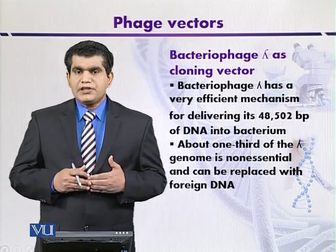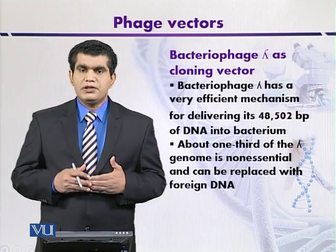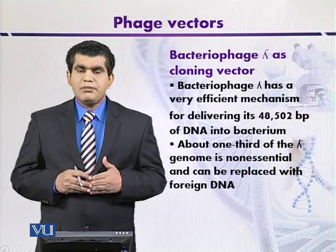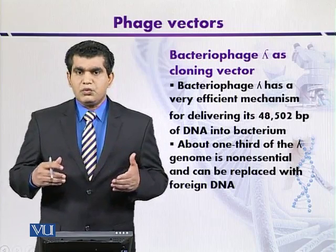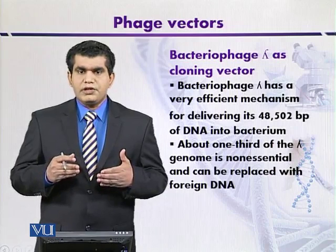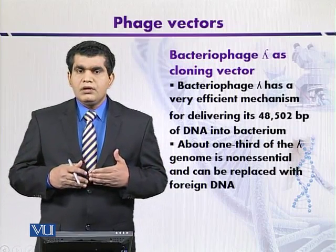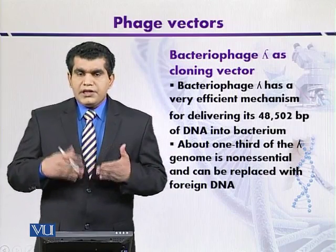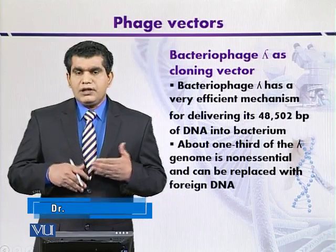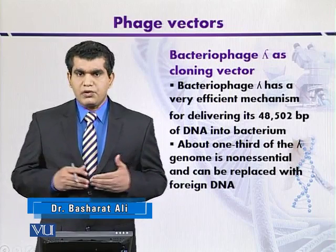Bacteriophage lambda has the ability to infect E. coli by inserting its genomic DNA. If we have a look at the genetic map of the lambda genome, we will find that it is approximately 48.5 kilobases in size. When naturally isolated from lambda phages, it is mostly present in linear duplex form.